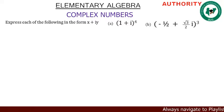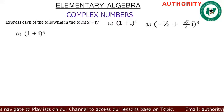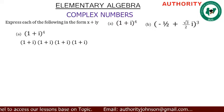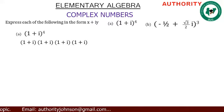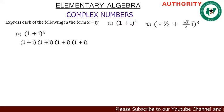Now let's go. We have part A: (1 + i) raised to power 4. Let's expand it. This raised to power 4 can be written as (1 + i)(1 + i)(1 + i)(1 + i) — that is, four places. When you want to shorten it you write it as (1 + i)^4, but when you want to expand it you write it this way. Now let's pick the first two brackets and multiply them.